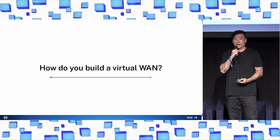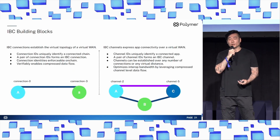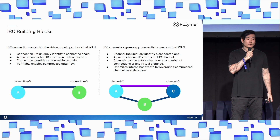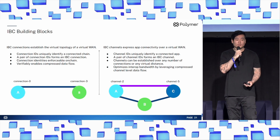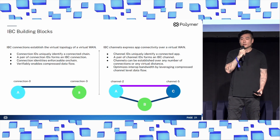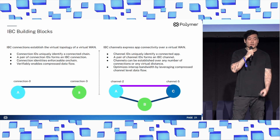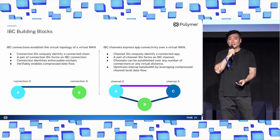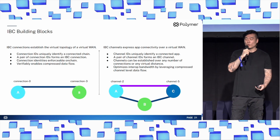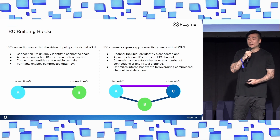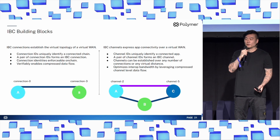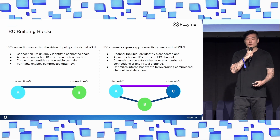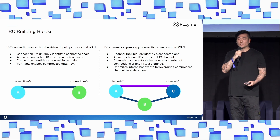So how do we build this virtual WAN? Let's use IBC building blocks. IBC connections help establish the virtual topology of a virtual WAN. Connection IDs can uniquely identify a connected chain, a pair of connection IDs can form an IBC connection, and connection IDs are enforceable on-chain — this verifiably enables compressed data flow over the network. IBC channels express application layer connectivity over a virtual topology or virtual WAN. Channel IDs uniquely identify an application in the network, and a pair of channel IDs forms an IBC channel. Channels can then be established over any number of connection hops or any virtual distance, allowing for optimized interop bandwidth by leveraging compressed connection-level data flow.